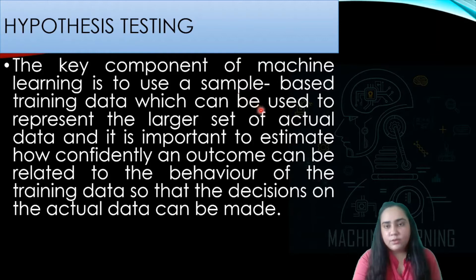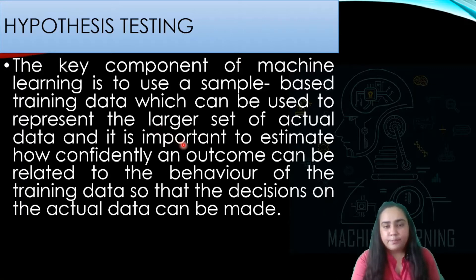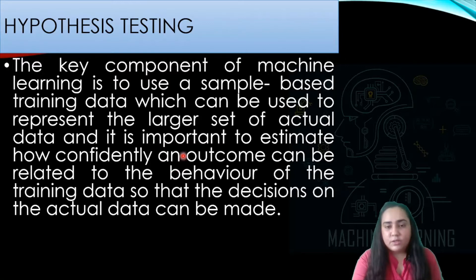The key component of a machine learning problem is to use sample-based training data, which is oftentimes used to represent a large set of actual data. We often take a sample out of a given population and then try to analyze that sample and make decisions about the entire population. It is very important to estimate how confidently an outcome can be related to the behavior of the training data so that decisions on the actual data can be made.